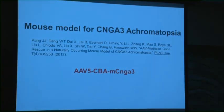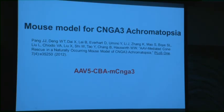The second model was for the CNGA3 form of achromatopsia — one of the subunits of the cation channel. Again serotype 5. We used a CBA general promoter here. We have subsequently also used PR2.1 and it works just fine. Again, this uses the mouse CNGA3 cDNA.